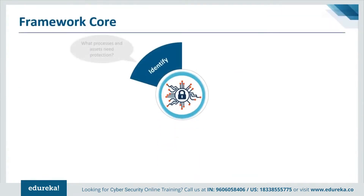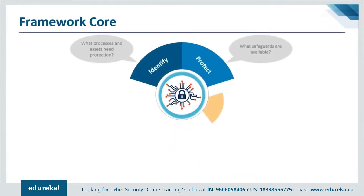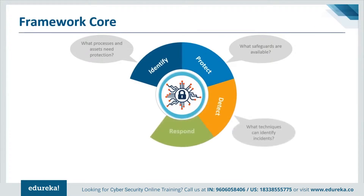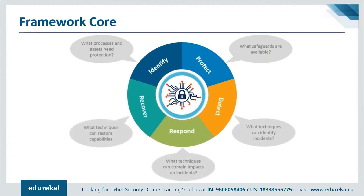The core is a set of desired cybersecurity activities and outcomes organized into categories and aligned to informative references. The framework core is designed to be intuitive and to act as a translation layer to enable communication between multidisciplinary teams using simplistic and non-technical language. The core consists of three parts: functions, categories, and subcategories. It includes five high-level functions: Identify, Protect, Detect, Respond, and Recover.